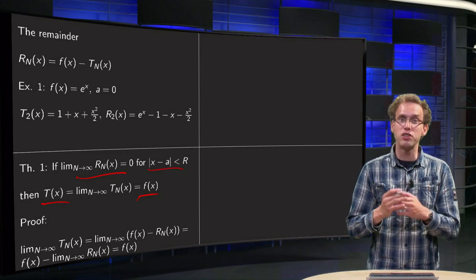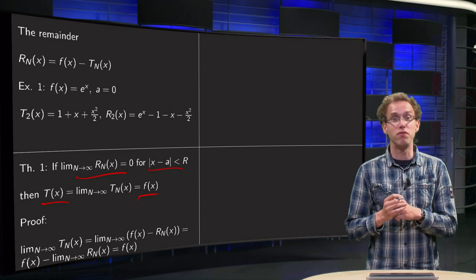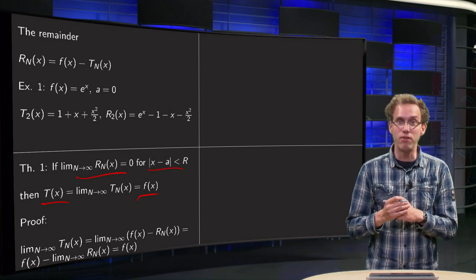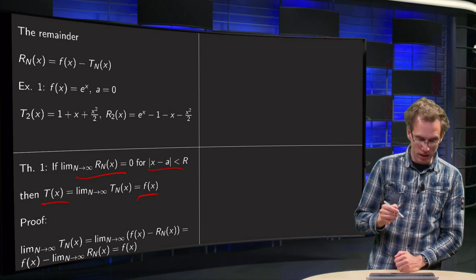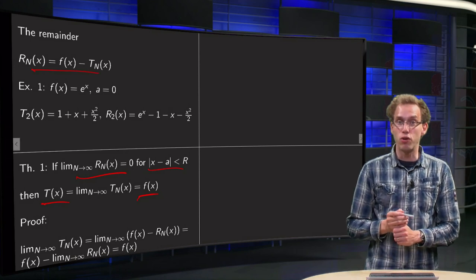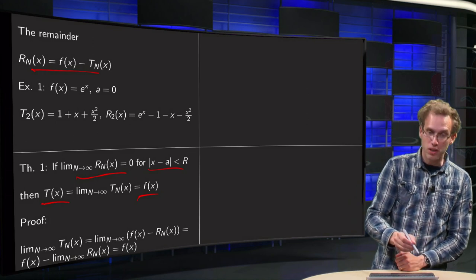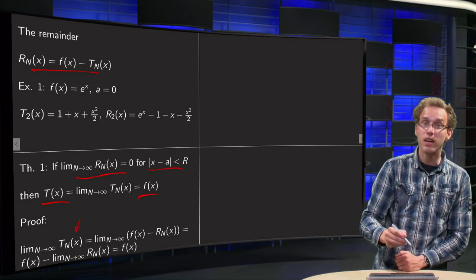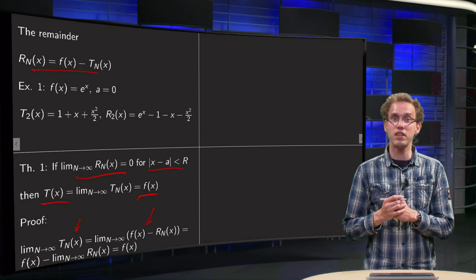So, the Taylor series, limit n to infinity, in that case will equal a function. Well, why is that? Well, we can, from this equation here, we can solve for the T_n, so the T_n of x equals f minus the R_n of x.